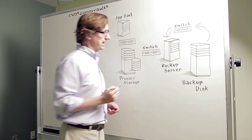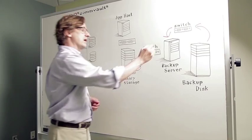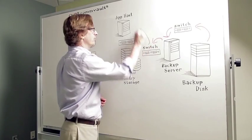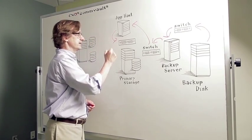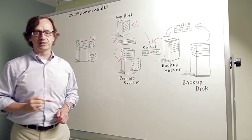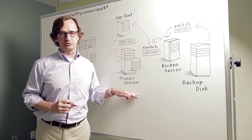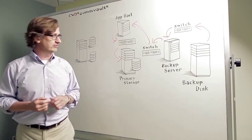That's going to come back down through your backup server, out of the backup server, back into the switch network, back up to the application host where you're recovering that information, and then back to another switch network again, and finally getting to the primary storage where that data is eventually recovered.